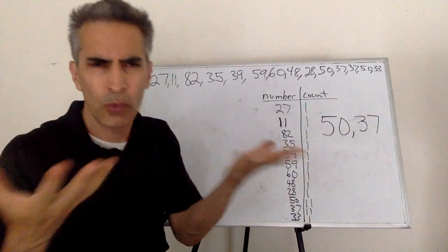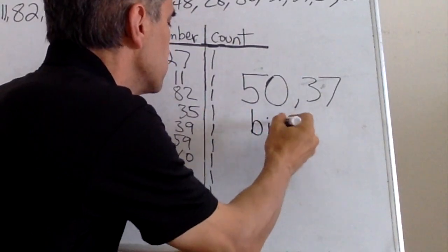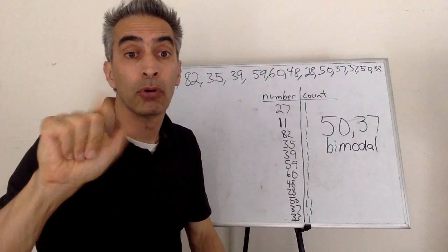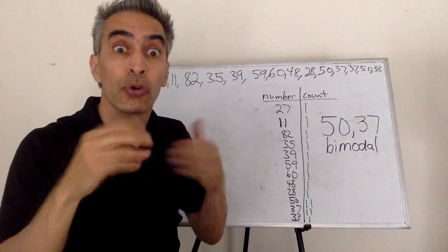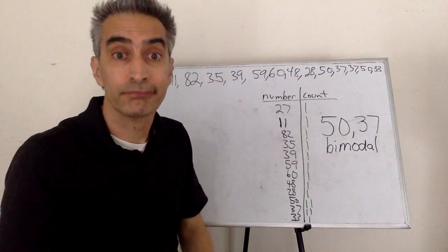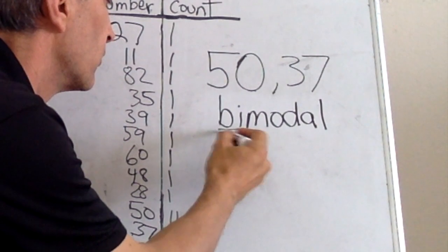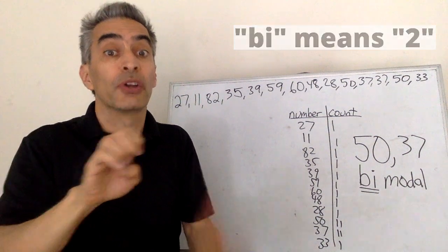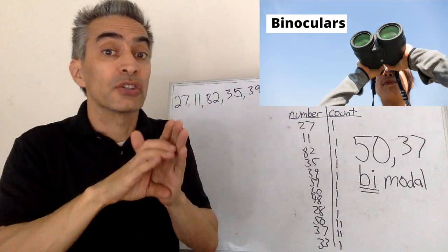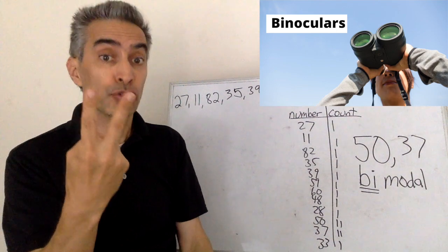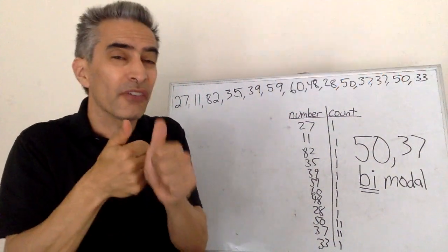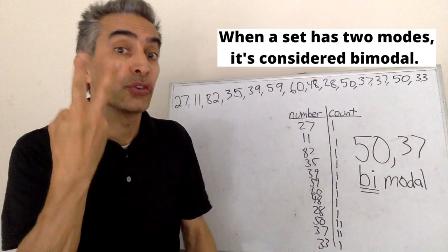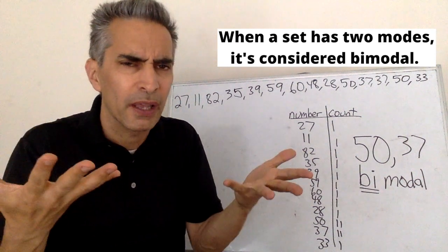This set of numbers is bimodal, because it has two modes: 50 and 37. Bi means two. For example, imagine binoculars — they allow two eyes to see far away. When a set has two modes, it's considered bimodal.